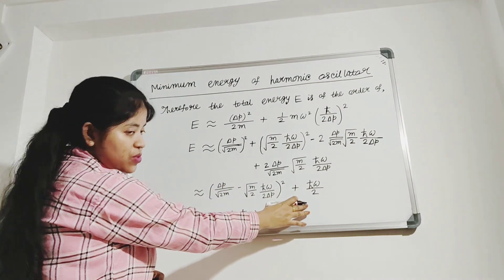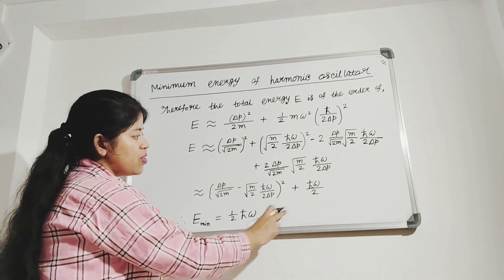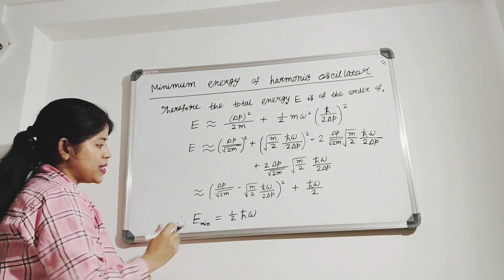Now this is the expression for the total energy. The minimum value of energy will be half h-cut omega. Only this term will survive for minimum energy.